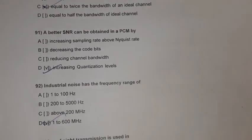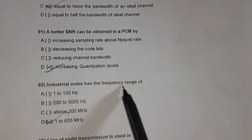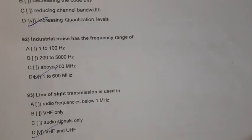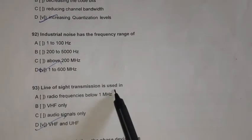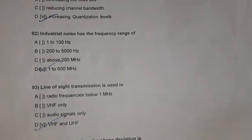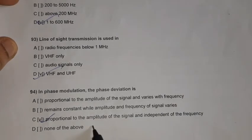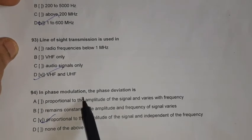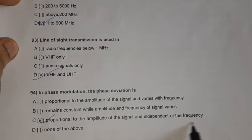Question 92: Industrial noise has the frequency range of 1 to 600 megahertz. Question 93: Line-of-sight transmission is used in VHF and UHF. Question 94: In phase modulation, the phase deviation is proportional to the amplitude of the signal and independent of frequency.